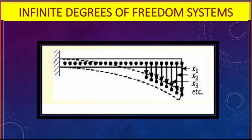Infinite degrees of freedom systems: the best example is a cantilever subjected to a load at its free end. When a cantilever is loaded at its free end, particles on the cantilever have different displacements — x1, x2, x3 — so they have different independent motions. Therefore, it is an example of infinite degrees of freedom.